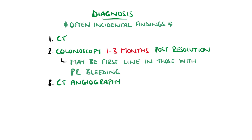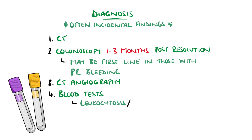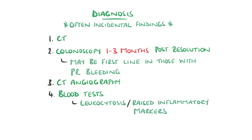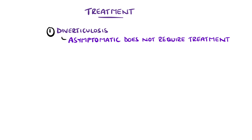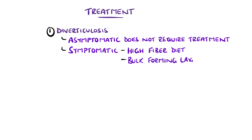Blood tests are quite nonspecific and include a full blood count, which may demonstrate leukocytosis, as well as other inflammatory markers like CRP. In general, the treatment can vary largely depending on the severity. Asymptomatic diverticulosis does not require treatment or diet modification, while those with symptomatic diverticulosis may benefit from a high-fibre diet, although the evidence currently is not conclusive.